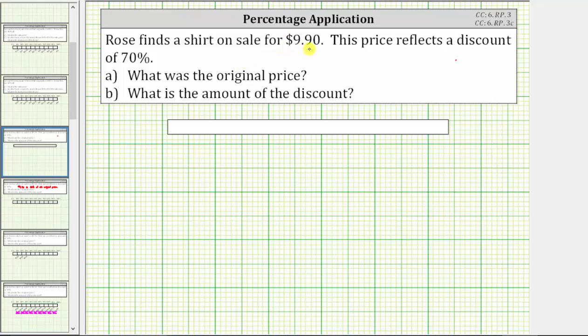Rose finds a shirt on sale for $9.90. This price reflects a discount of 70%. A, what was the original price? And B, what is the amount of the discount?